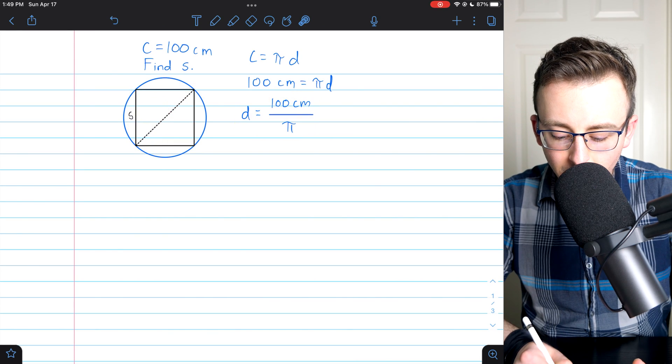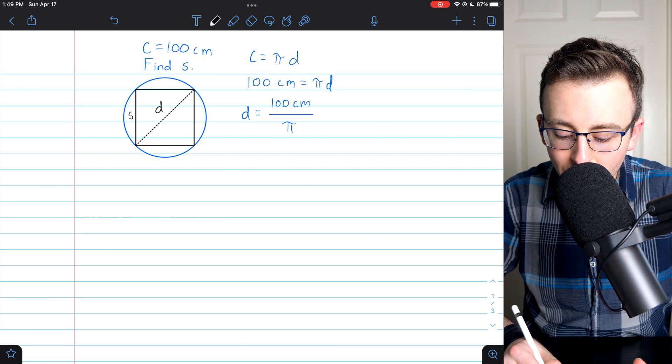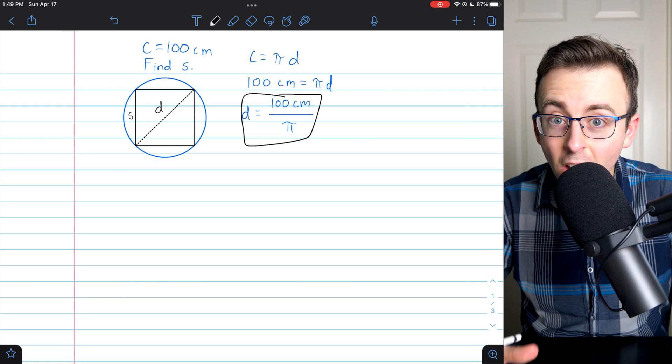So again, this here is what we'll call d. It's the diagonal of the square, but it's also the diameter of the circle. And we know how big it is.